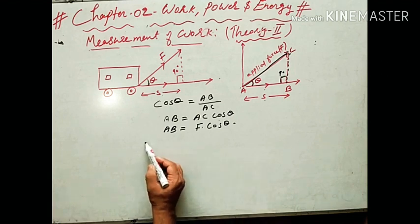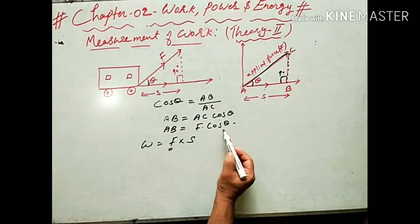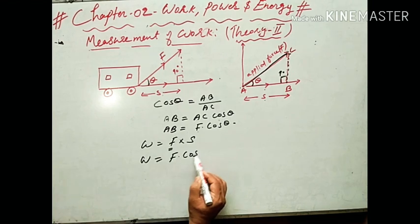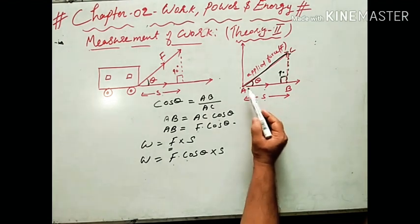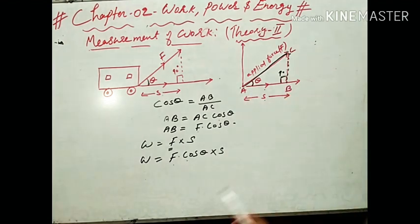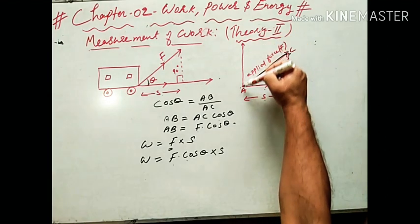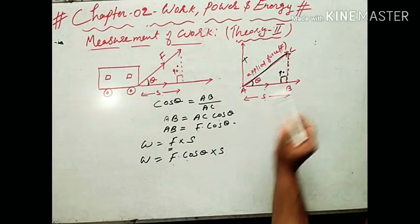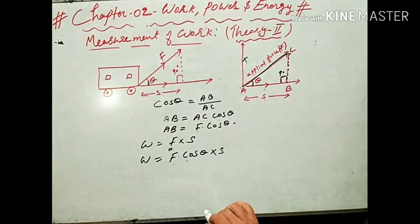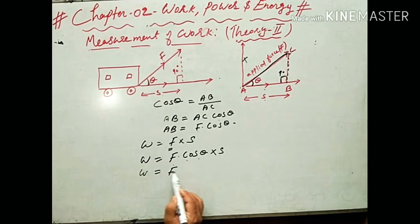Work done equals force into displacement, F into S. The effective force here is F cos theta — the component of force in the direction of displacement. The vertical component of force is ineffective in producing any motion, but the horizontal component along AB in the direction of displacement is effective. So we count the horizontal component F cos theta, and W equals F cos theta into S.